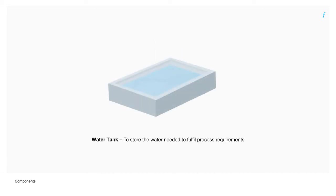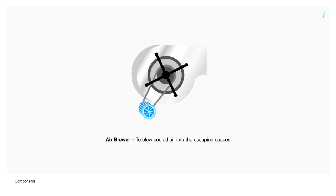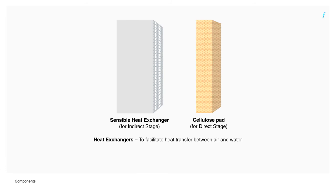The water tank is used to store the water needed to fulfill process requirements. A float valve keeps the water level in check and prevents tank overflow. An air blower is used to blow cooled air into the occupied spaces. Heat exchangers facilitate heat transfer between air and water.